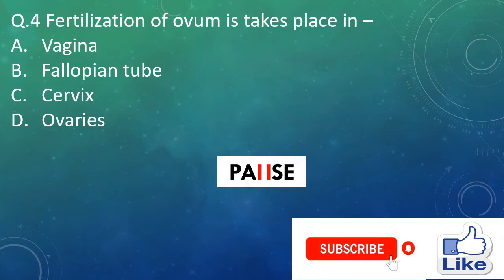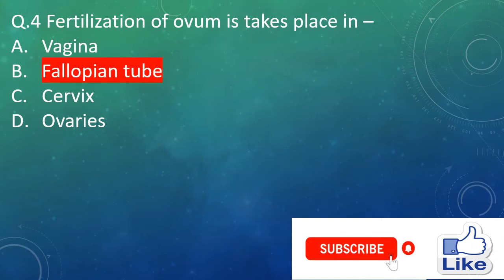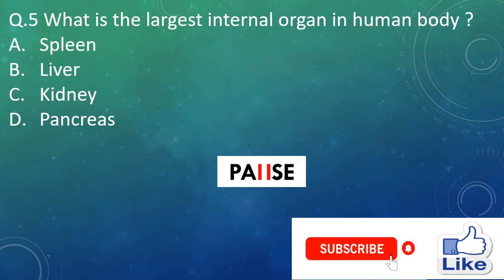Question 4. Fertilization of the ovum takes place in — option A: vagina, option B: fallopian tube, option C: cervix, and option D: ovaries.